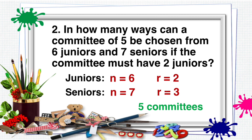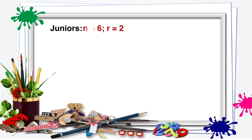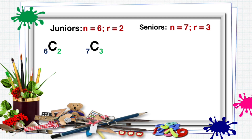Solving the problem: for juniors, N is equal to 6 and R is equal to 2 — that is combination of 6 taken 2 at a time. For seniors, N is equal to 7 and R is equal to 3 — that is combination of 7 taken 3 at a time.